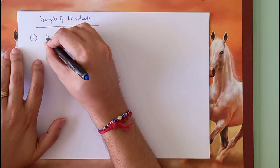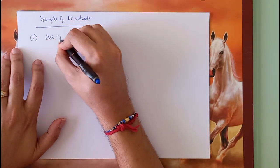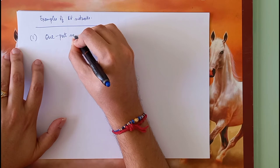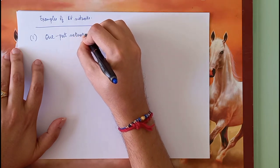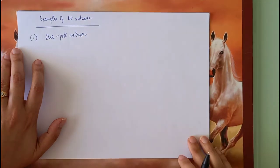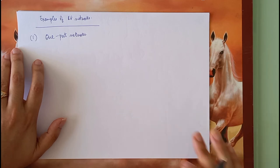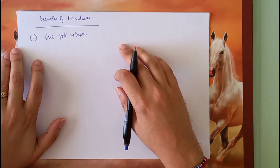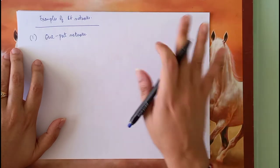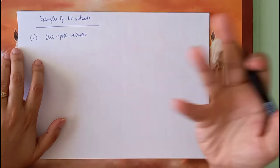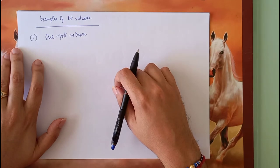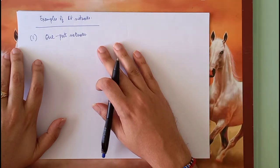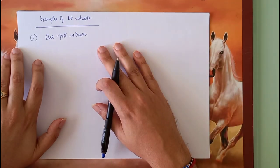First, let us go for one-port networks. One-port networks are networks which have only one port, not two ports. So their Z matrix, Y matrix, and S matrix will be just one element. The S matrix will just be the reflection coefficient, nothing else.